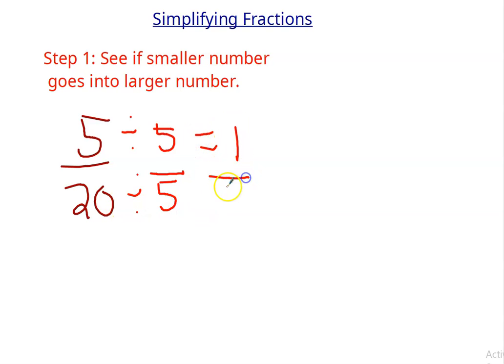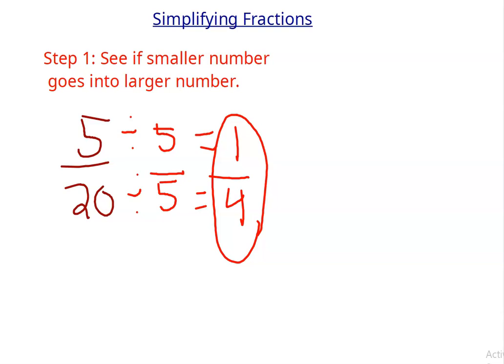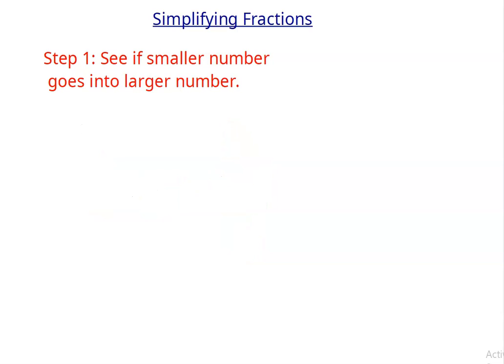And 20 divided by 5 is 4. So that is 1 fourth. Now, the reason I say see if the smaller number goes into the larger number, and not to see if the numerator goes into the denominator, is because you can have an improper fraction that can be simplified. Let's say I have 36 over 6. Now the smaller number is on the bottom, but the fact remains the same.